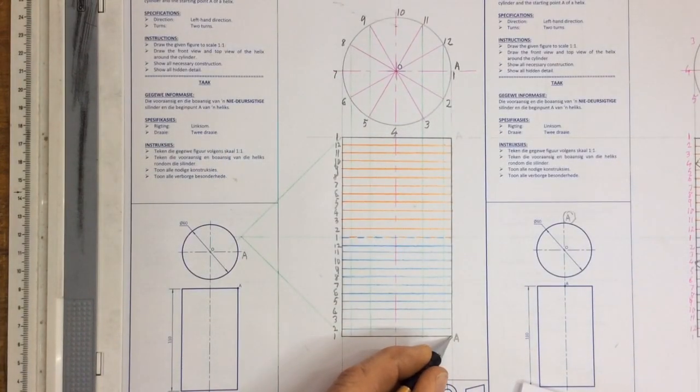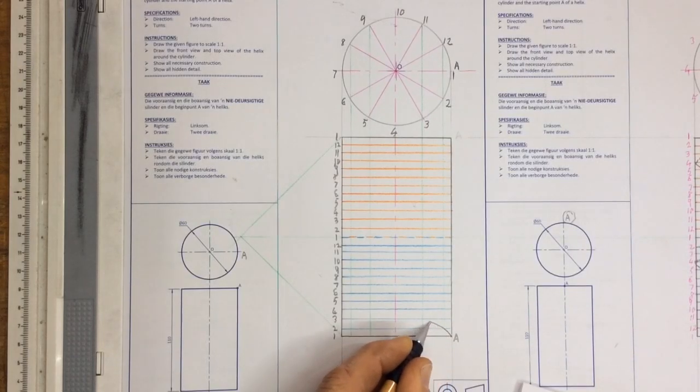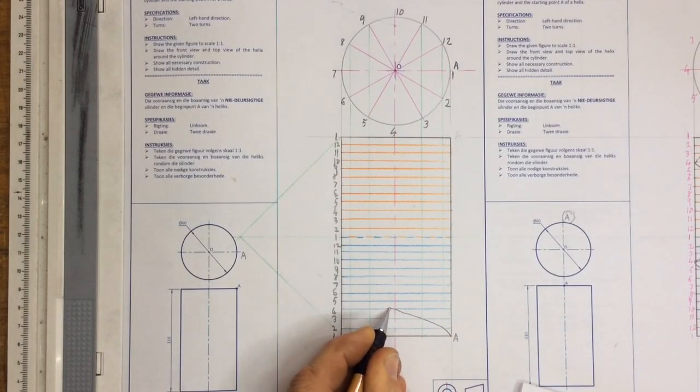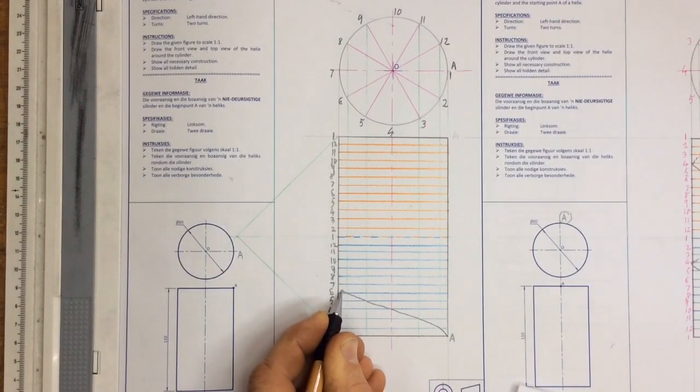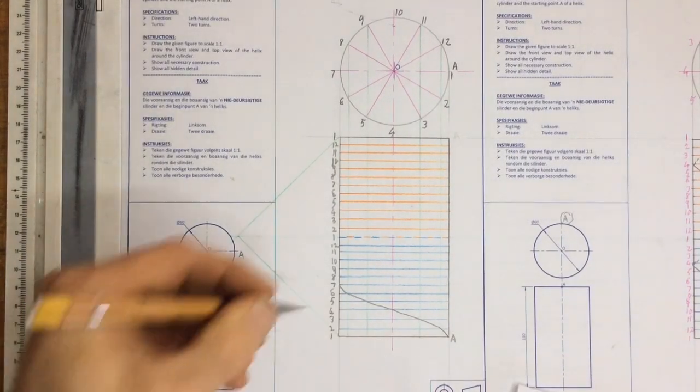So I can start my helix and I can go from one to two, two to three, three to four, four to five, five to six, six to seven. It's all done in dark.